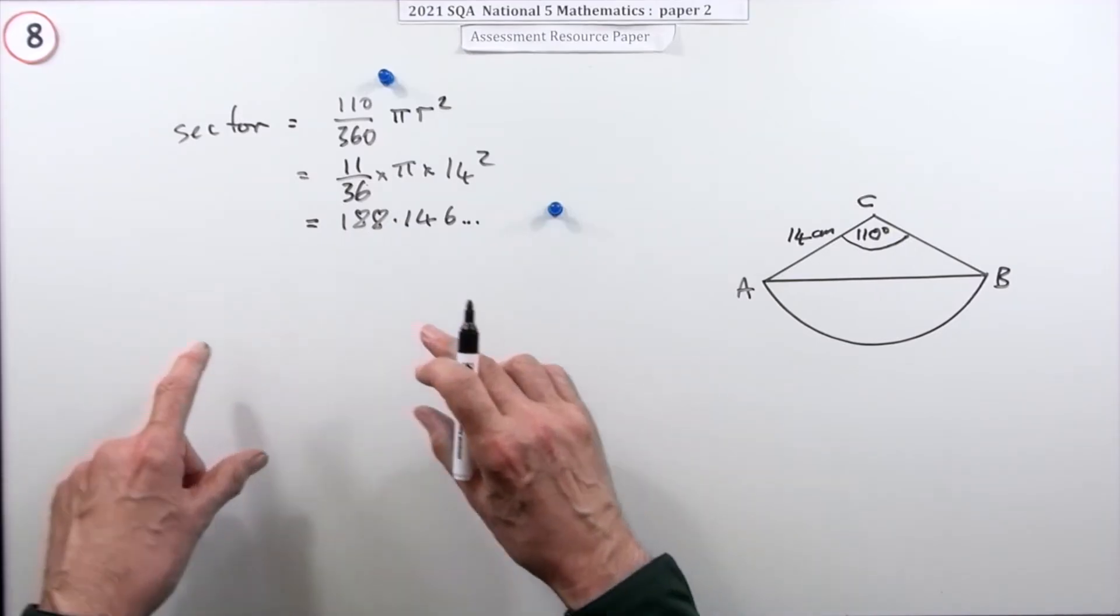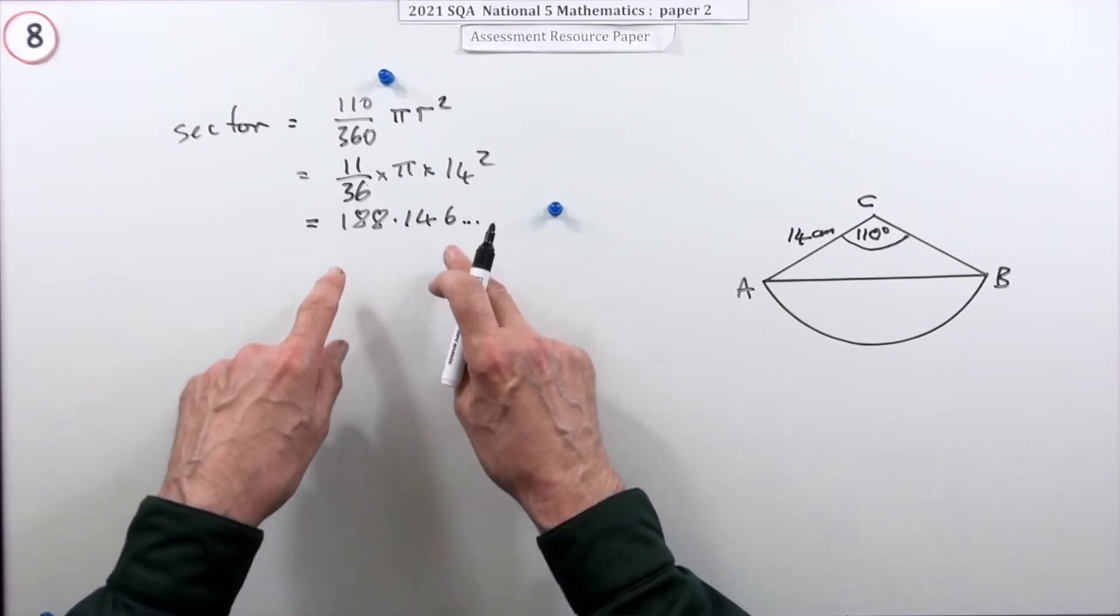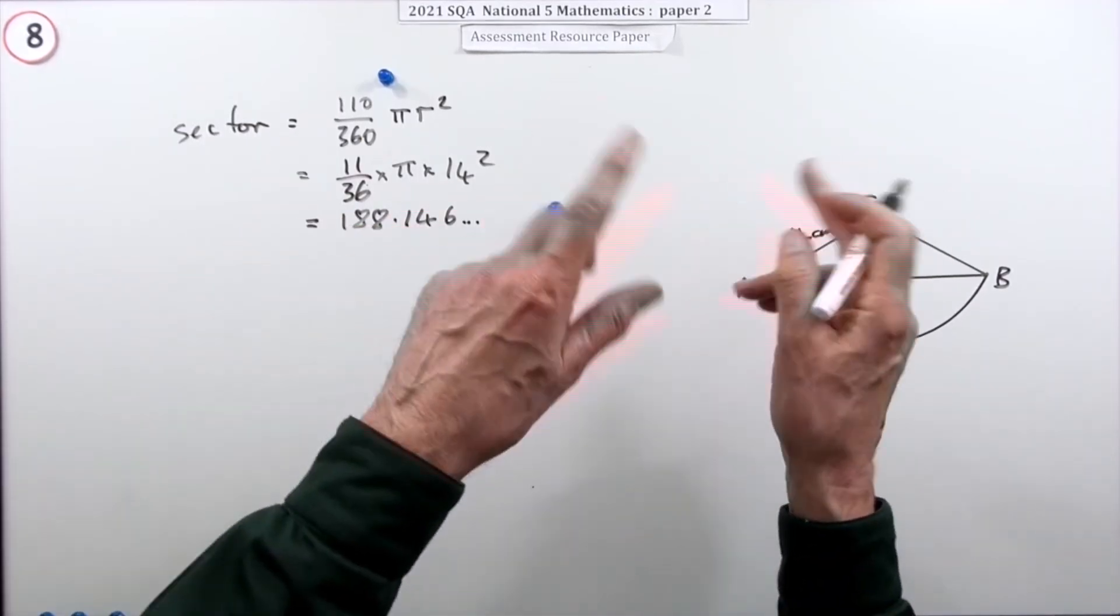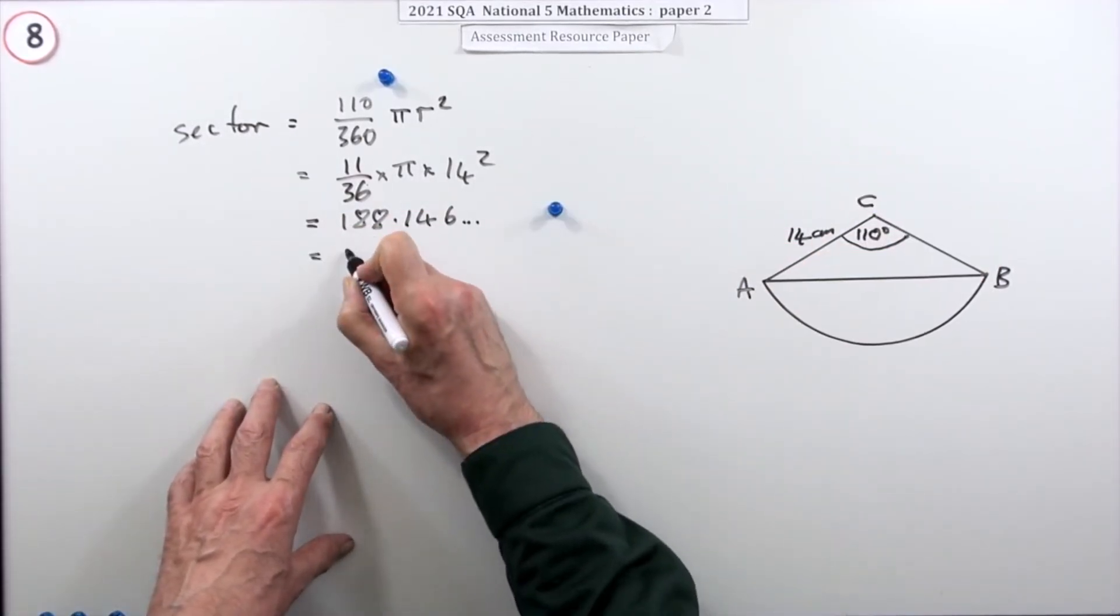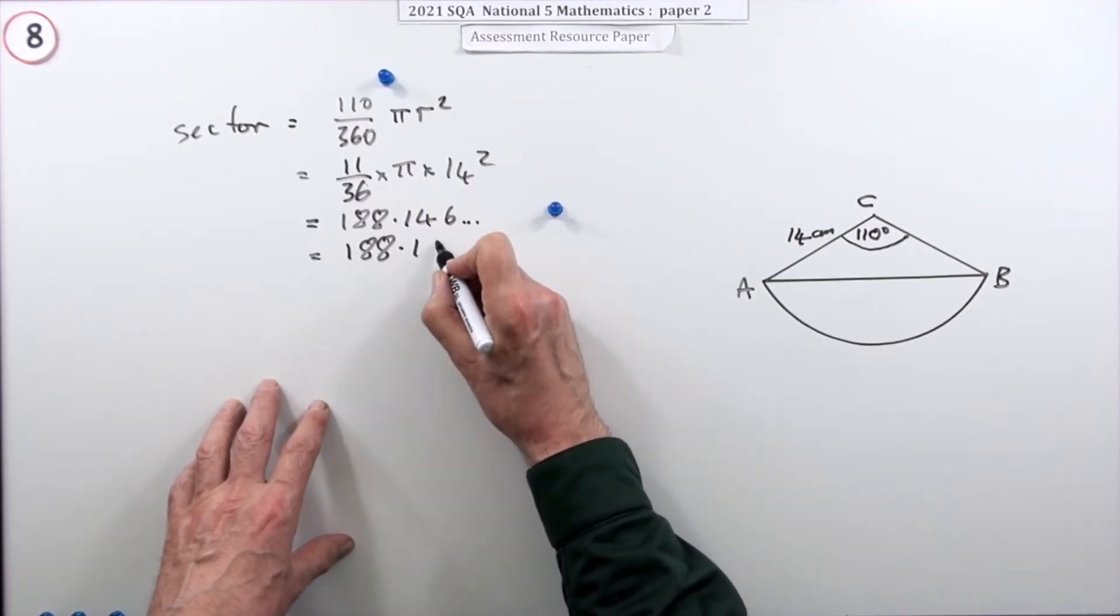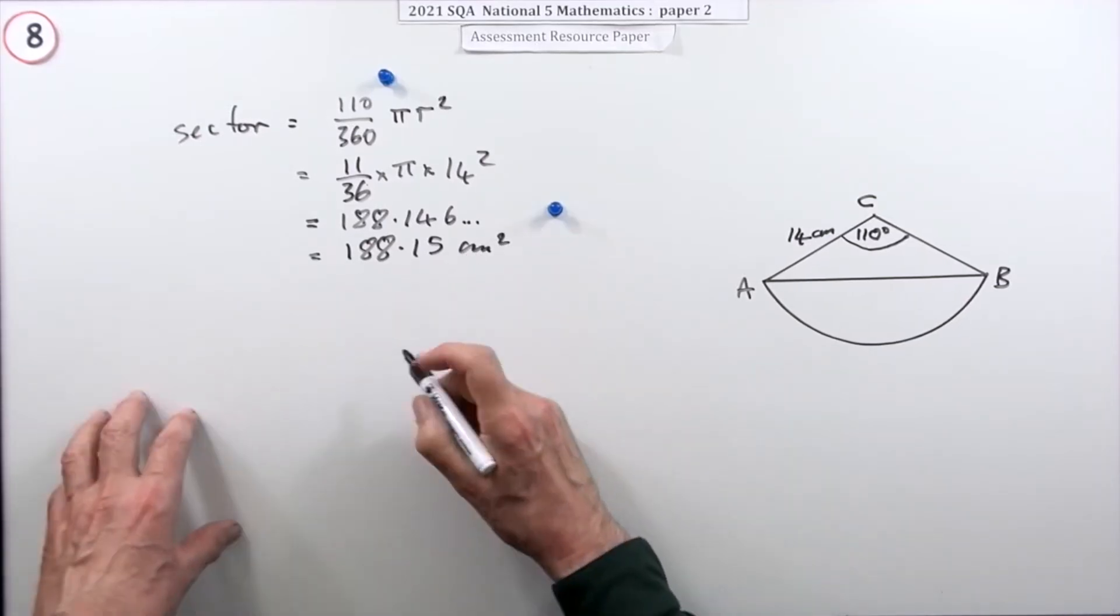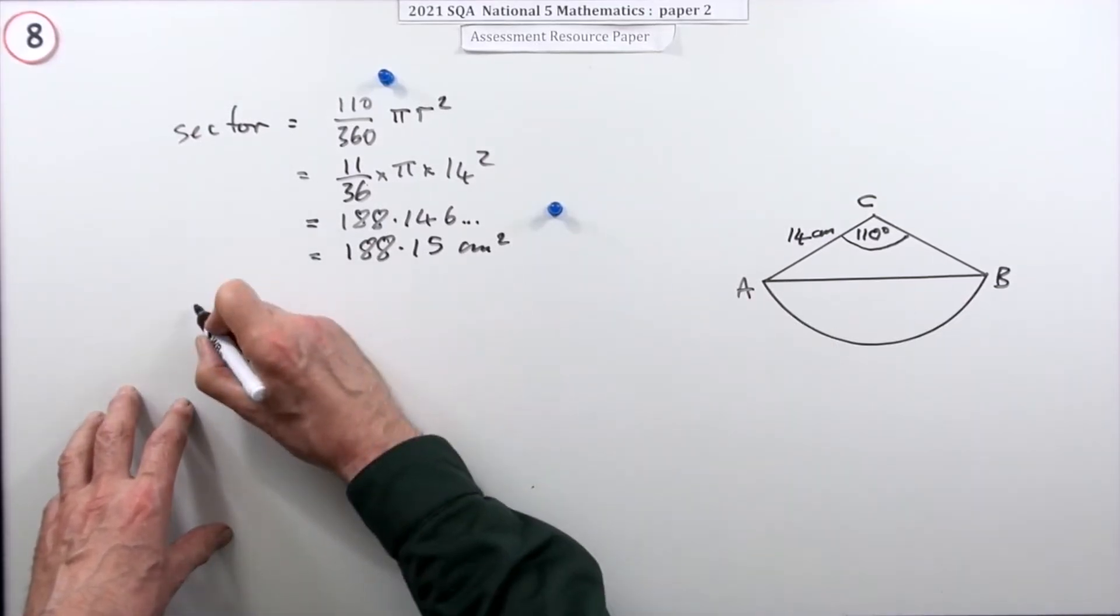Since I'm going to do another calculation and take that away, I'll lose that unless I store it in another memory. So I'm going to round this off - I'll call it 188, or one decimal place, 188.15 centimeters squared. I'll have a definite answer for that part.